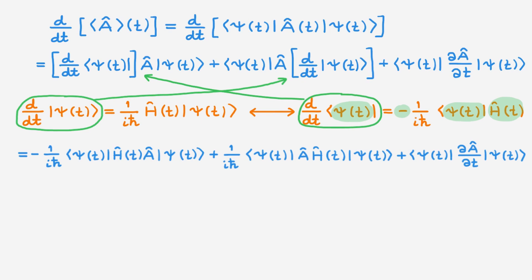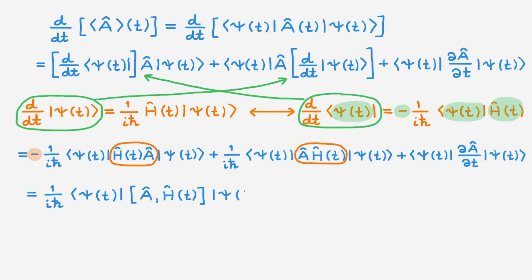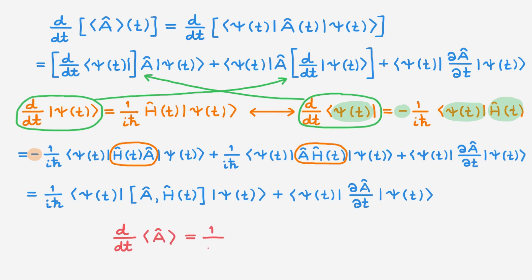The first two terms only differ by a minus sign and by the fact that the product of the Hamiltonian with the operator A appears in the order HA in one term and AH in the other. This means we can combine the first two terms into an expression involving the commutator of A with H. Both terms now look like expectation values, so we can write the time derivative of the expectation value of A as equal to 1 over iℏ times the expectation value of the commutator of A with H, plus the expectation value of the time derivative of A. This expression is one of the key results of today's video and is a general result that applies to any observable A.